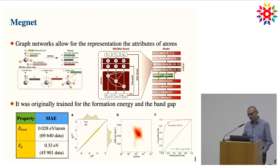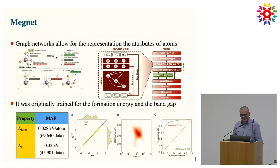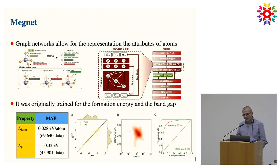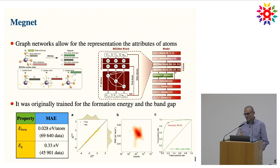MAGNET is a convolutional graph network with different layers. They developed and trained it on the formation energy of the Materials Project — on around 60,000 to 70,000 data — and achieved very nice accuracy between the predicted formation energy and the actual one. They did transfer learning, and you can get the band gap with retraining on a smaller number of data with very good accuracy. Once you have created the network, you can reuse it as a descriptor of your structure.